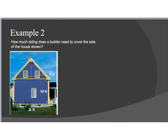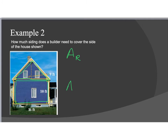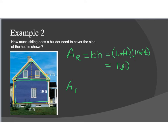Example two asks how much siding a builder needs to cover the side of a house. Even though this house has windows cut out of it, you still have to buy the siding in full lengths, so we find the area pretending the windows aren't there. We have two shapes: the base of the house is a rectangle, and the roof portion is a triangle. So we need to find the area of each.